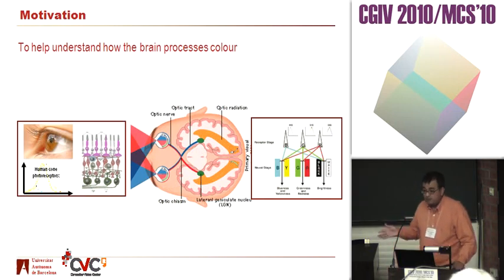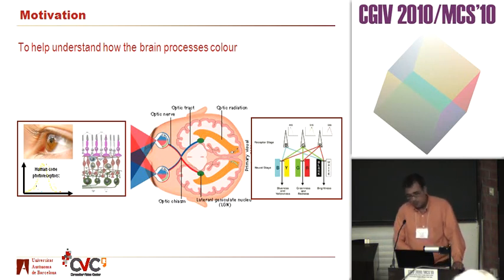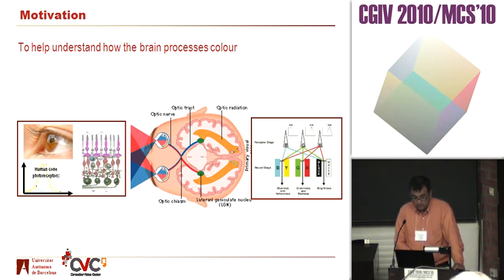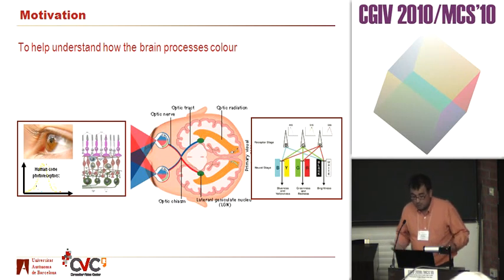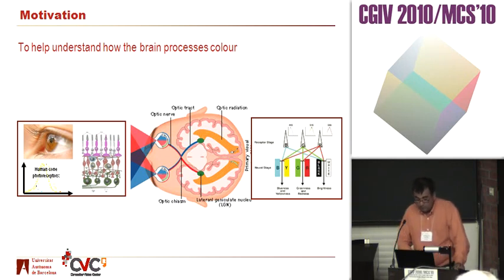Carl Gegenfurtner has already talked a lot about this, so he saved me the effort to explain the properties of the color coding in the brain. The main motivation for this work is to try to help people who try to understand how the brain processes color. We all know that everything starts in the retina with a set of photoreceptors, and then they collect color information.